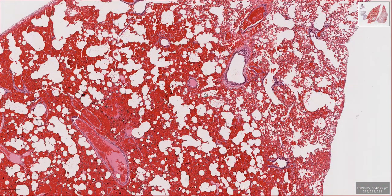You might say that was easy because in all the bronchi and bronchioles there were no red blood cells really, whereas the arteries and veins were packed full of them.